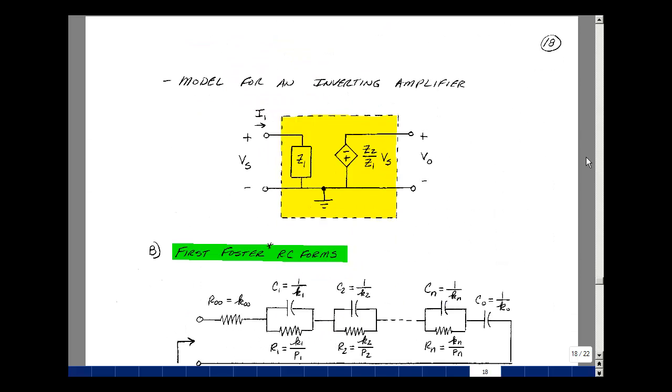Our model for an inverting amplifier is an impedance Z1, a voltage-controlled voltage source with a gain of minus Z2 over Z1 times Vs. Same result we had in ECE-201, except that now R1 is replaced by Z1 and R2 is replaced by Z2. Now since the ratio of Z2 to Z1 is our transfer function, it'd be nice if we had some way of creating these impedances.